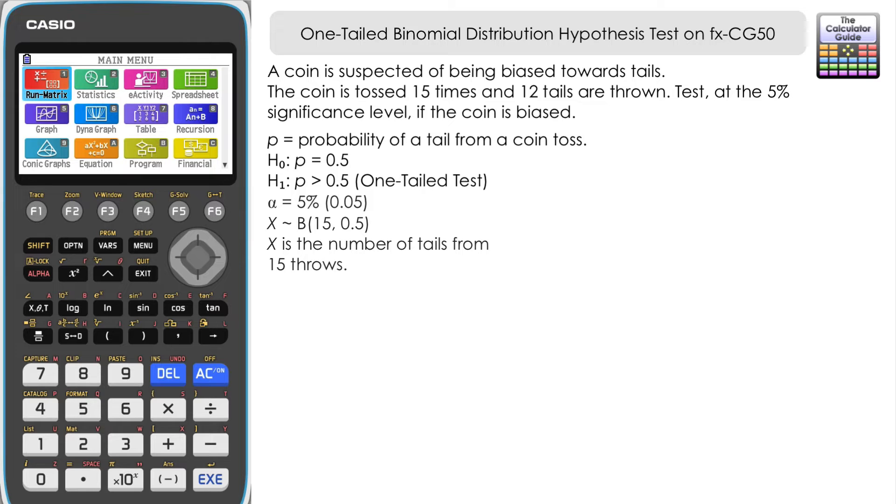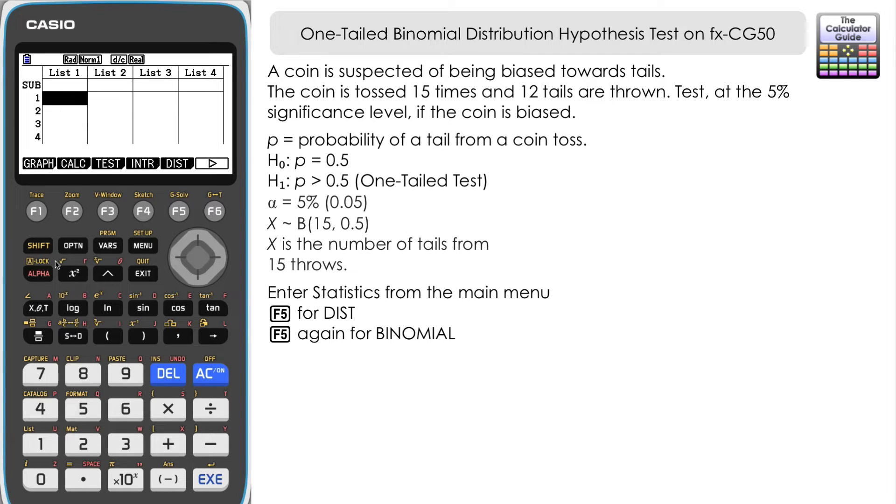Now that we've got that set up, we can use the calculator to find a critical value to compare against the 5% significance level. We need statistics mode, so navigate to statistics or press 2. Then F5 for distribution, and F5 again for binomial. Now we've got a choice here, and we need to refer back to the question to decide which one we're using.